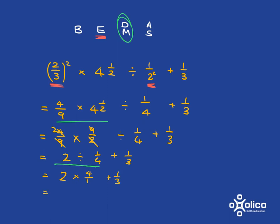And so what we get here is 2 times 4, which is 8. And 8 plus 1 third is just 8 and a third. And if we wanted to, we could write that as an improper fraction, which is 25 over 3.